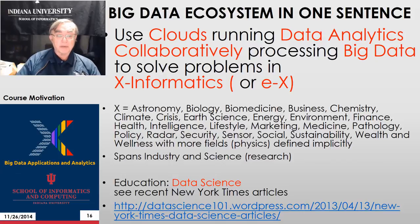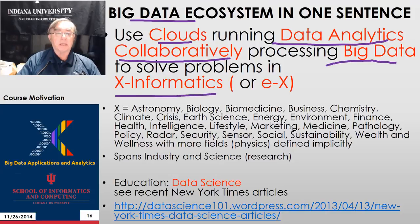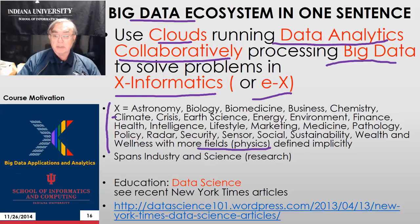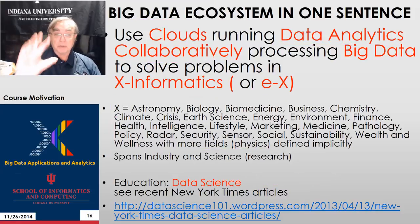This brings us to our famous summary of the course — the big data ecosystem in one sentence: we're using clouds, running data analytics, doing it collaboratively, all working together, processing big data, and solving problems in X informatics. X informatics is a superset of X analytics, and here are the values of X we discovered on the web. We noted there are some like physics which weren't actually defined yet. And of course we're doing data science — that's what this course is all about — an exciting new academic area which captures all of this.